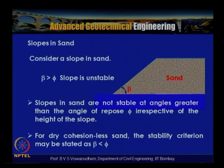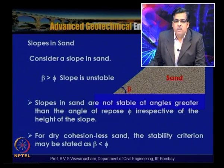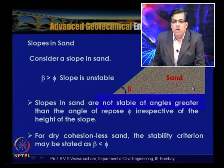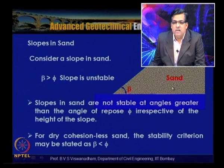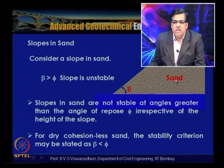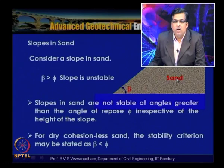Consider as a first example slopes in sand. A typical slope formed with dry sand is shown here, with slope inclination beta and a certain height h. If phi is the friction angle, the maximum friction angle for a stable condition is called the angle of repose.